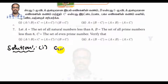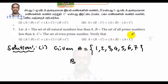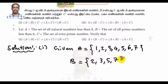Given: A is the set of natural numbers less than 8, so A = {1, 2, 3, 4, 5, 6, 7}. B is the set of all prime numbers less than 8, that is B = {2, 3, 5, 7}. C is the set of even prime numbers; the only even prime number is 2, so C = {2}.